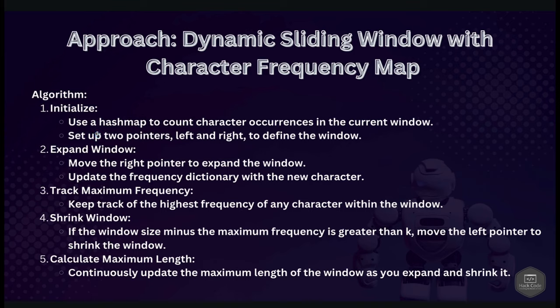We keep track of the maximum frequency of any character in the current window. If the window size minus the maximum frequency is greater than k, we shrink the window from the left, because that means we can't do more than k replacements. When window size minus max frequency exceeds k, we can't perform any more replacements, so we shrink the window. At the end we return the maximum length.